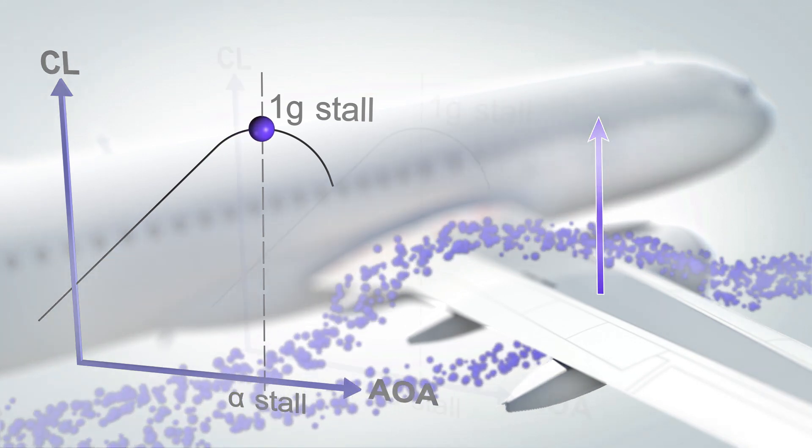Similar to a turn, when a climb is initiated, the load factor will increase due to the temporary increase of the angle of attack. This will cause the V-alpha prot to move upward.